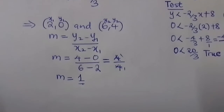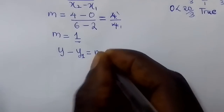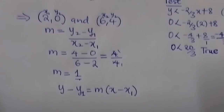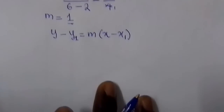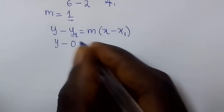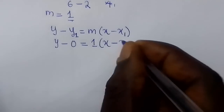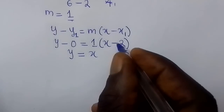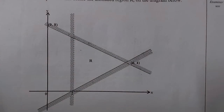We determine the equation using y − y1 = m(x − x1) with the point (2, 0) and gradient 1: y − 0 = 1(x − 2), which gives y = x − 2.